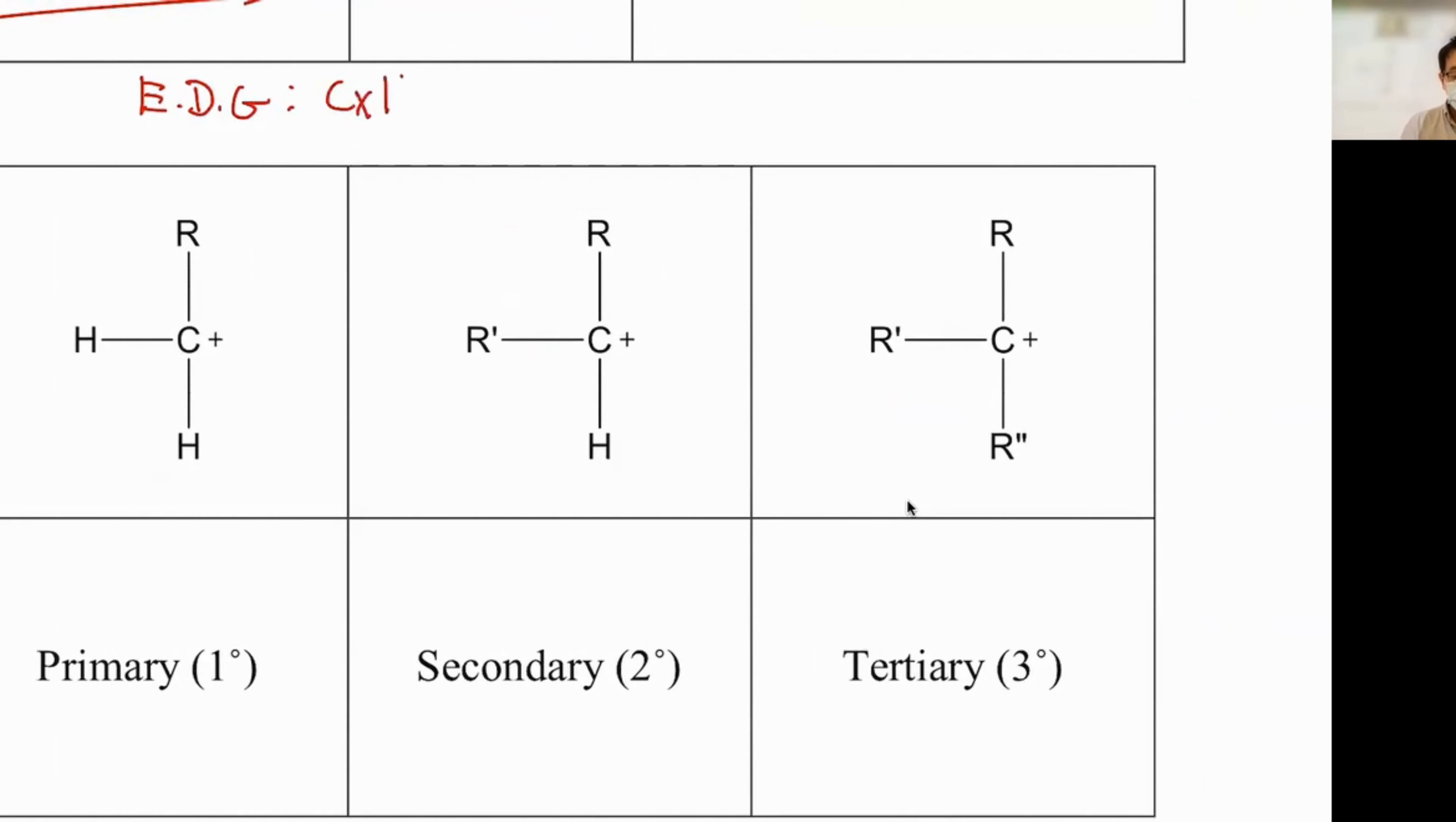Electron-donating group in general: a hydrocarbon. So whenever you see hydrocarbon appearing, this is by default donating. What is considered as a withdrawing group? By default is a halogen. The halogen can be Cl, can be Br, can be I, and so on and so forth. And this is electron-withdrawing.